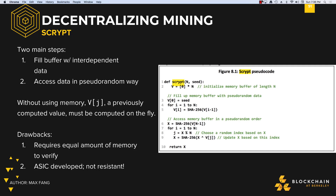However, Scrypt also has its drawbacks. It requires an equal amount of memory to verify, since verifiers have to fill and access an equivalent buffer with the same parameters. Remember that puzzles should be easy to verify, so this is not ideal. In addition, even though Scrypt was developed to be ASIC-resistant, an ASIC has actually been developed for it, so it's no longer considered ASIC-resistant.